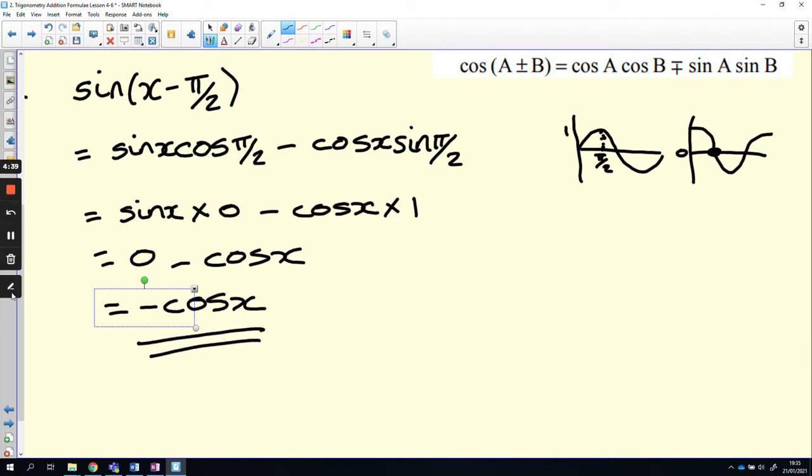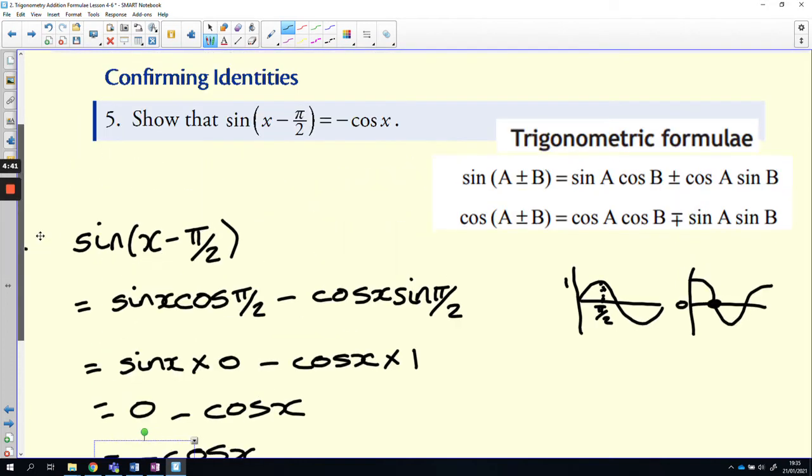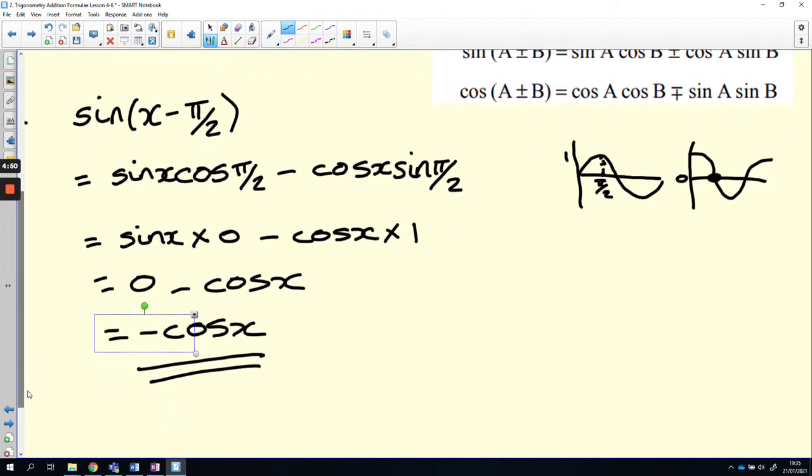Now let's just double check. What were we asked to show? Show that sin(x - π/2) is equal to minus cos x. That's exactly what we have. Okay.